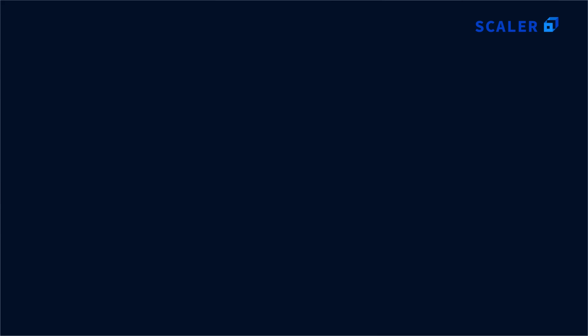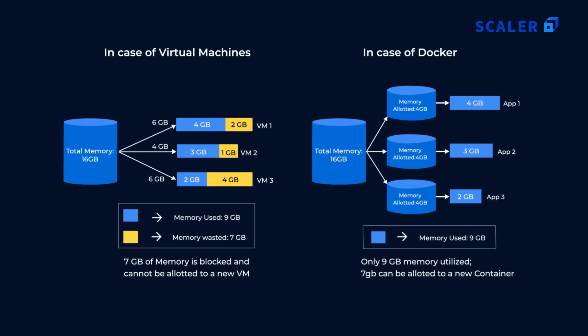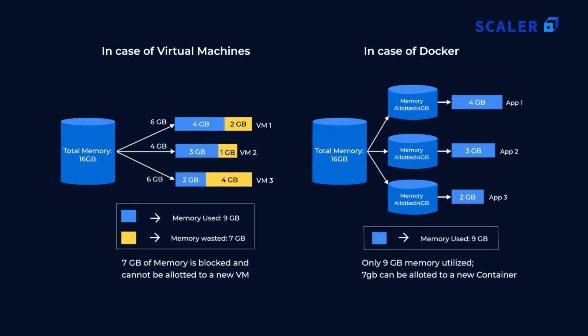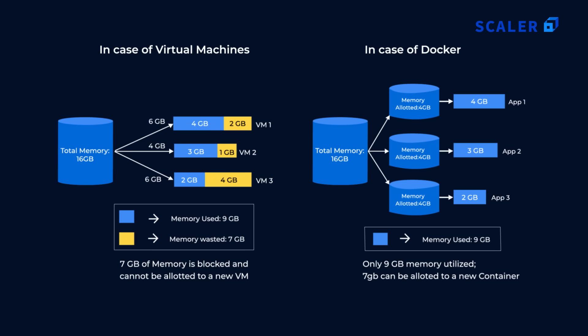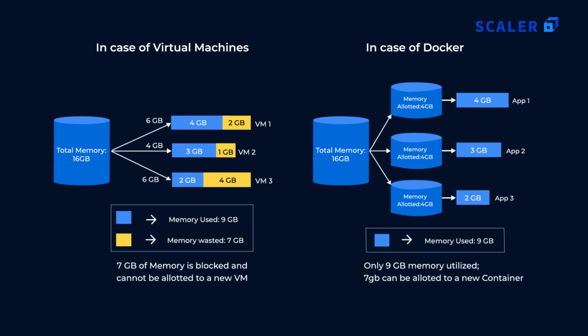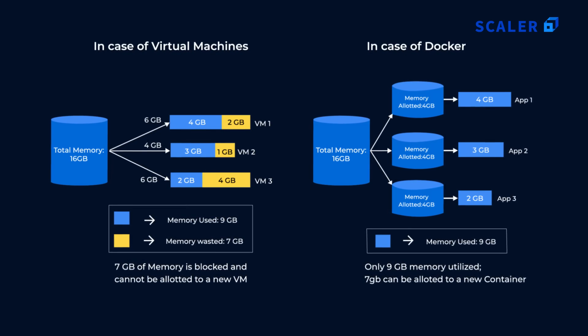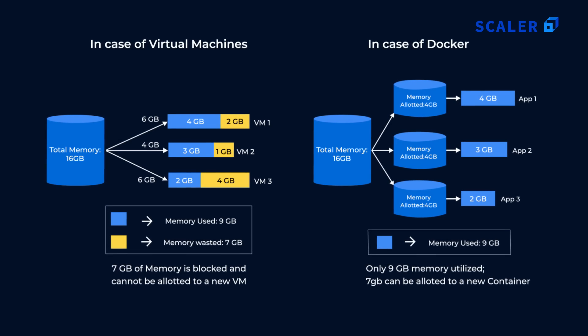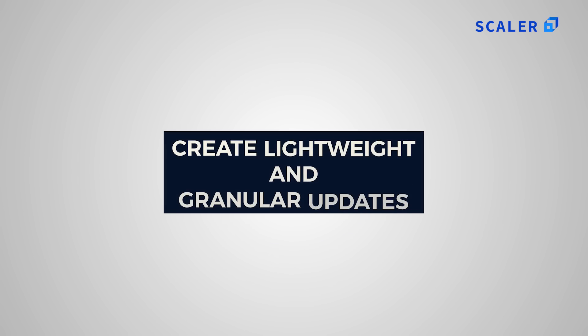What is Docker used for? Docker is often misunderstood as the first container technology, but container-related technology existed for years before Docker was released publicly in 2013. First, developers use Docker to create lightweight and granular updates. LXC requires multiple processes, while Docker containers can use a single process, so applications can continue running even while updating.